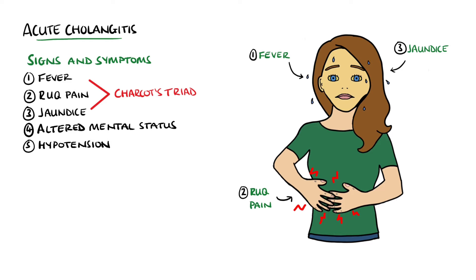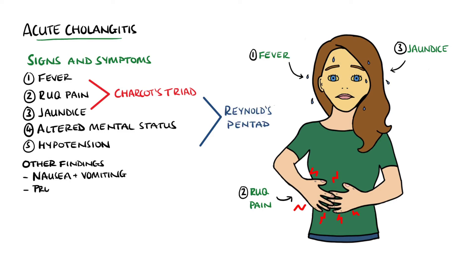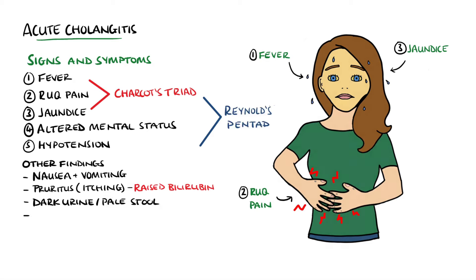In this case, additional findings may include an altered mental state and hypotension, which together with Charcot's triad make up Raynaud's pentad. Other findings in acute cholangitis can include nausea and vomiting, pruritus - which is itching, typically due to raised bilirubin levels - dark urine, and pale stools. We may also see rigors and tachycardia.